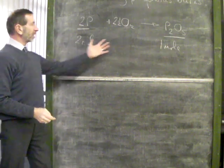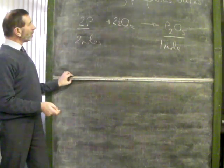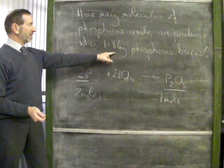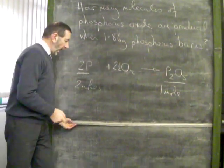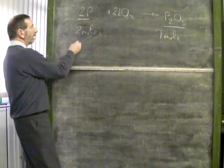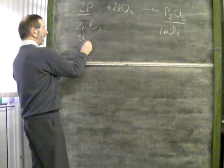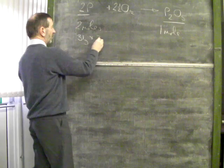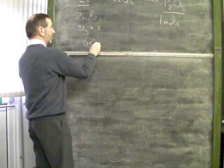We now have to turn these into numbers. Because the question talks about 1.86 grams of phosphorus, I need to write my 2 moles in terms of mass. Now, I know that 1 mole of phosphorus is 31 grams, so 2 moles of phosphorus will be 62 grams.